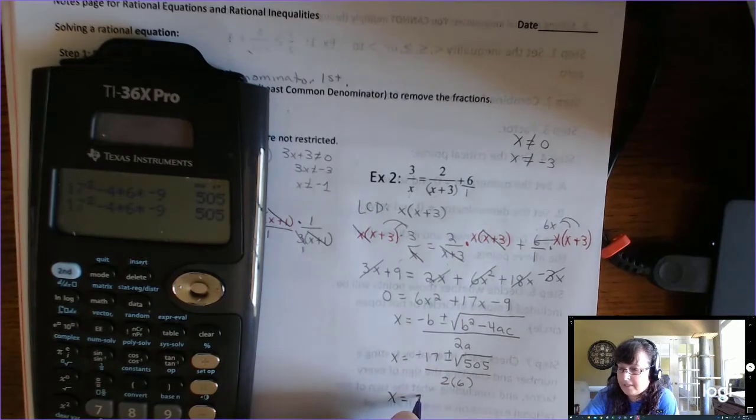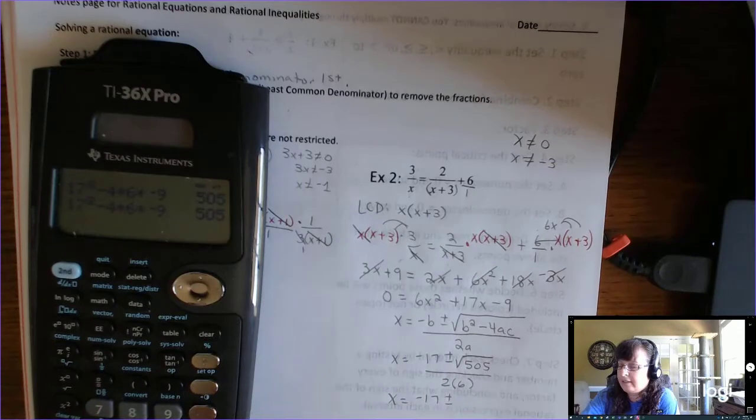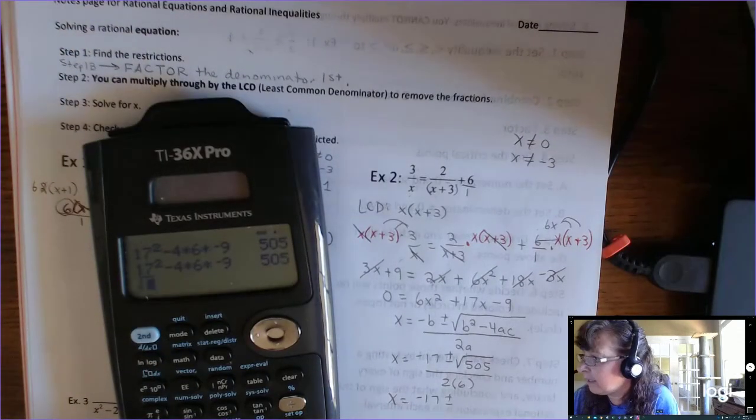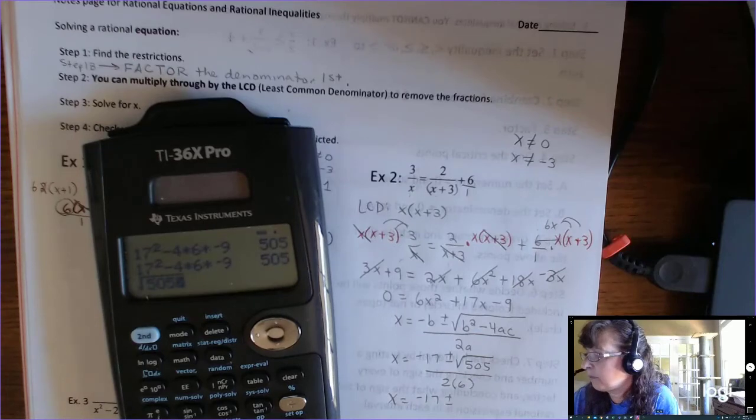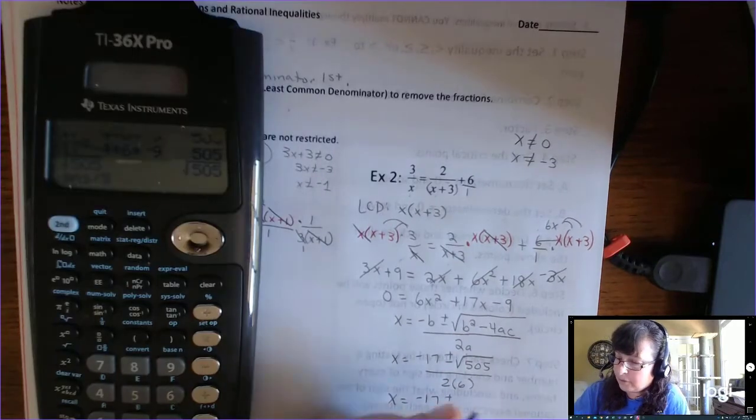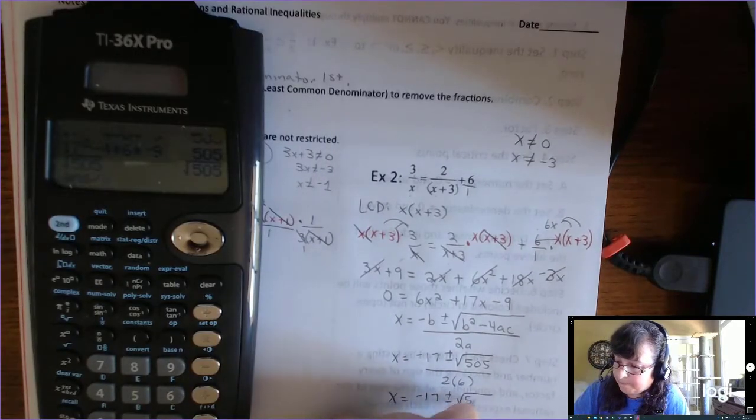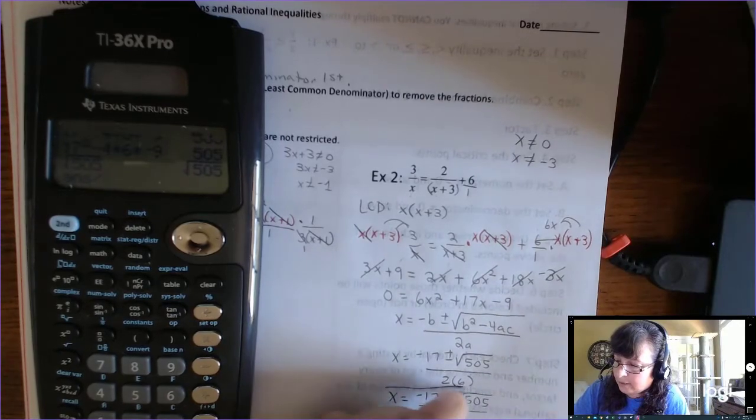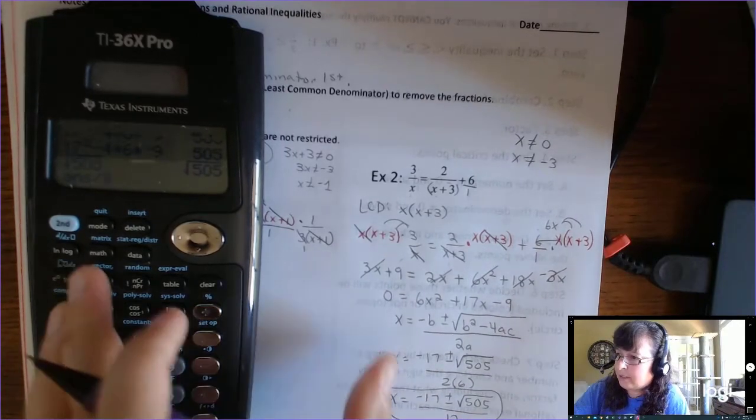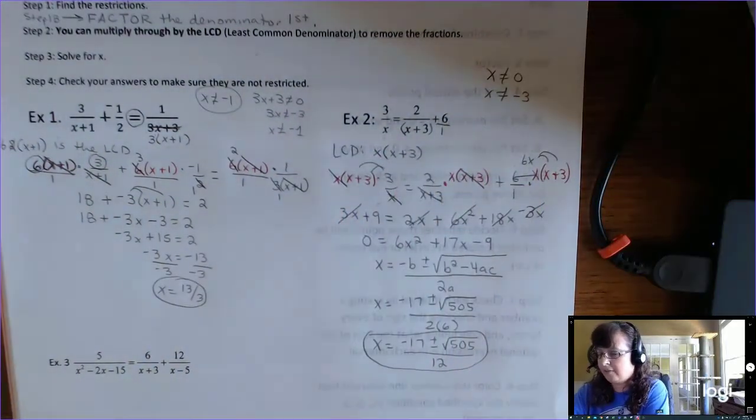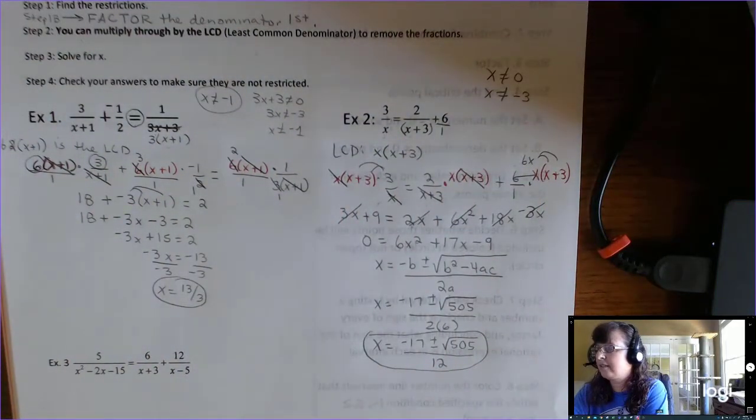So negative b would be negative 17 plus or minus. And the cool thing is I already found that. It was 505 over 2 times 6. So that's negative 17 plus or minus. Let's see if the square root of 505 has a perfect square in it that we can pull out. And it doesn't look like it. So you can't even reduce that. So those are my two roots. Two solutions. And obviously they're not 0 or negative 3. So those are my solutions to example 2.